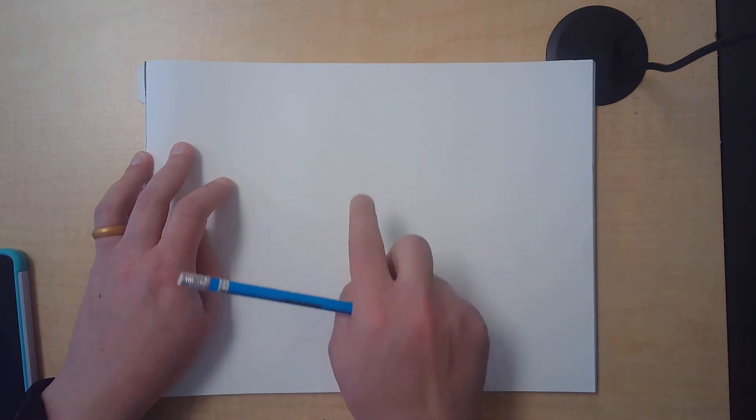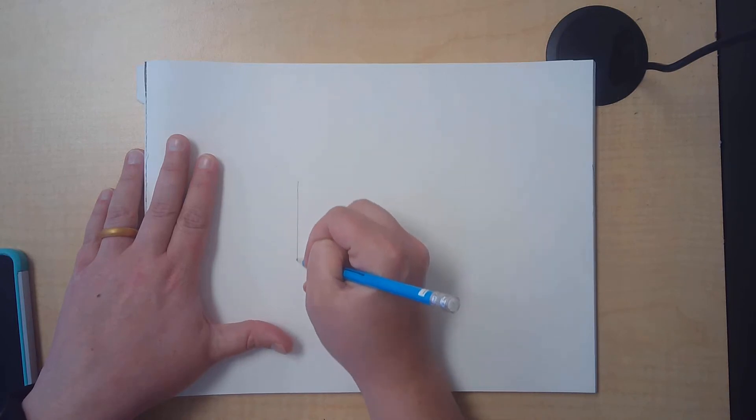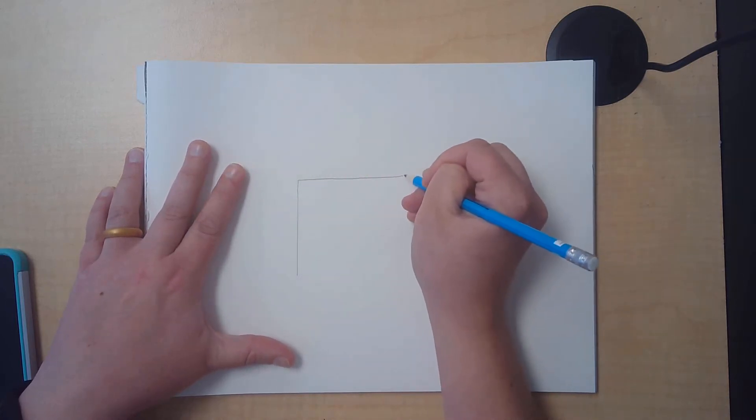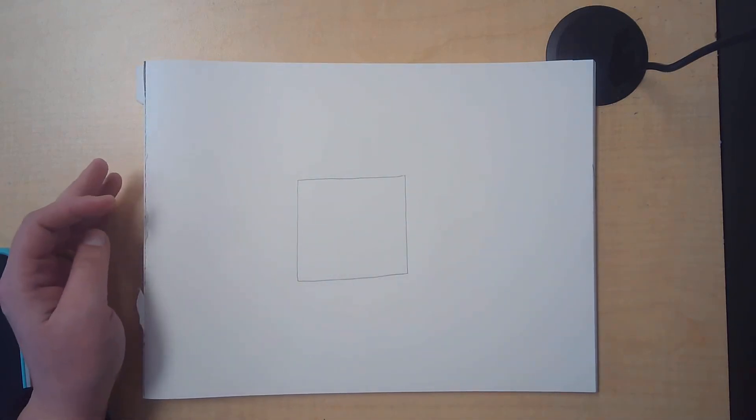We're going to start by drawing a nice house in the middle of our page. If you've never drawn a house before, it's really not too hard. We can start with a square. That's a pretty good square for a house.